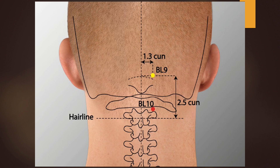Bladder 10 is used if the pain is on the midline or starting from the midline and spreading out. Location: on the nape, in the depression on the lateral border of the trapezius muscle within the posterior hairline, 1.3 cun lateral to the midline. Bladder 10 is a sea of chi point and a window of the sky point. Functions: expels wind, activates the meridian, soothes the sinews, benefits the head, alleviates pain, opens the sense orifices. Needling: perpendicular or oblique insertion 0.5 to 0.8 cun. Do not insert the needle deeply medially upwards to avoid injuring the medulla oblongata.